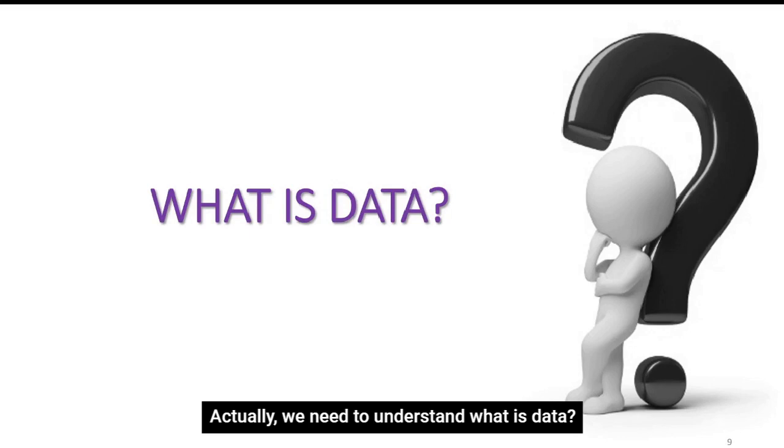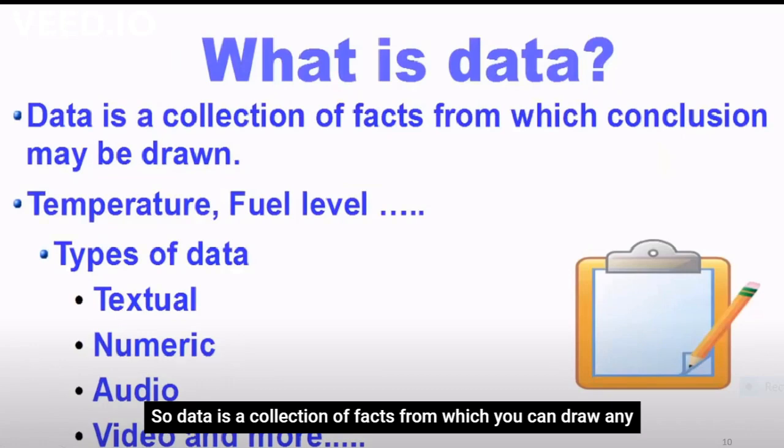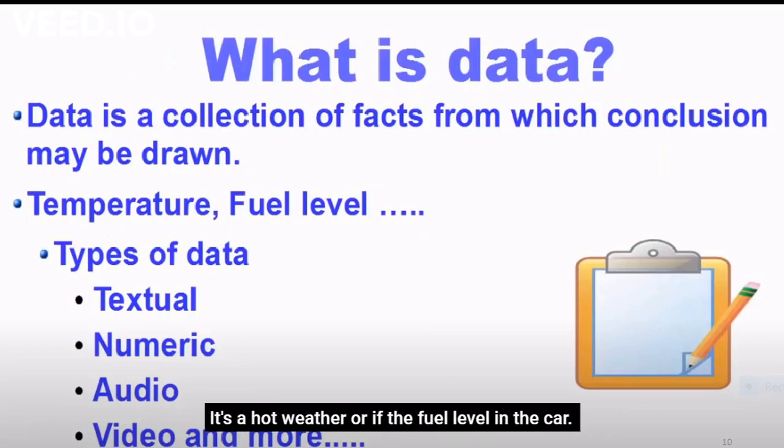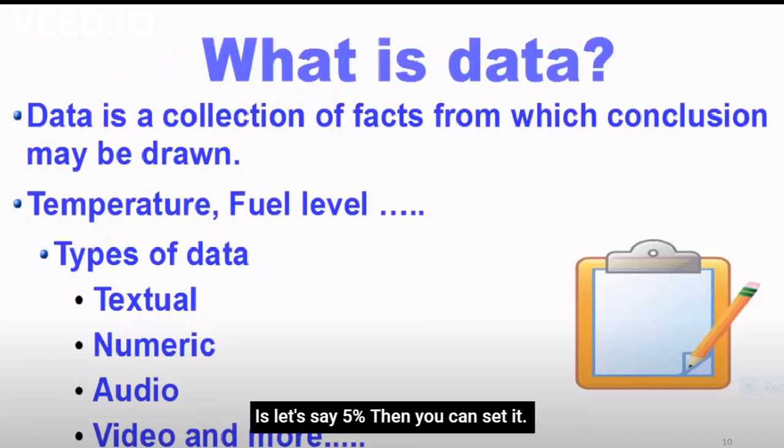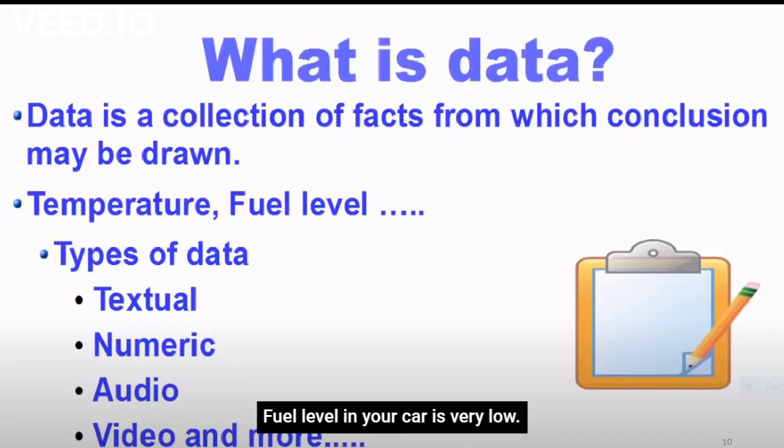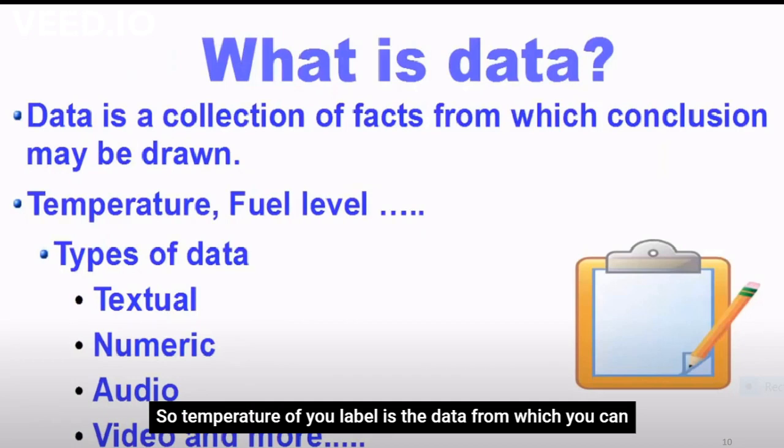Now before understanding what is data structure, we need to understand what is data. Data is a collection of facts from which you can draw conclusions. For example, temperature and fuel level: if the temperature of the room is 40 degrees Celsius, you can easily say it's hot weather. Or if the fuel level in the car is, let's say, five percent, then you can say that the fuel level in your car is very low so you need to refuel your tank. So temperature or fuel level is the data from which you can draw these kinds of conclusions.